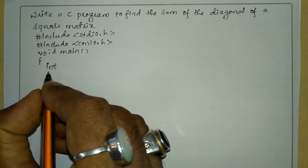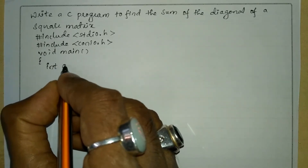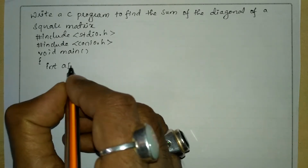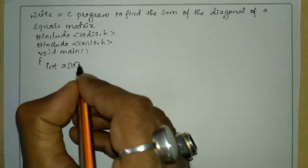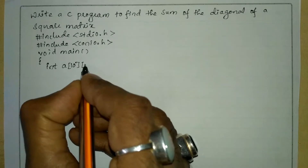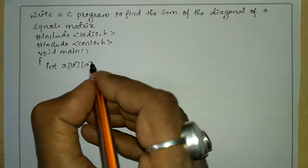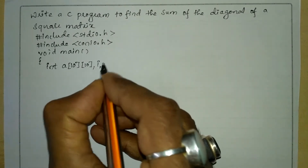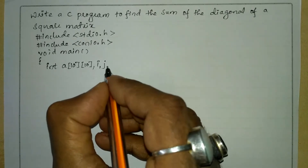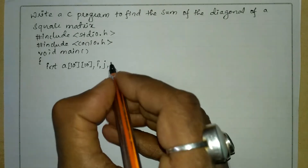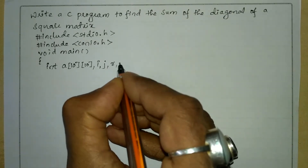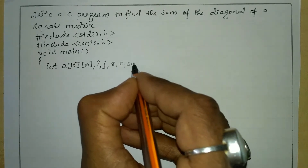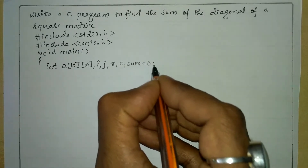Here I'm going to declare all the necessary variables before using them in the program. I'm going to write data type int and declare a two-dimensional array called A with first subscript size 10 and second subscript size 10. Next I'm going to declare i and j as indices, and also row, column, and sum initialized to zero.